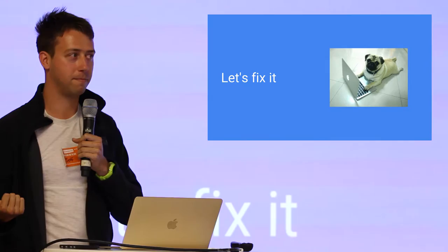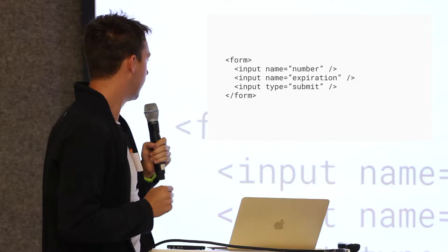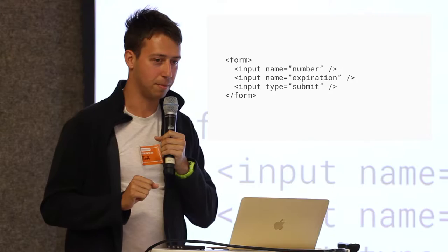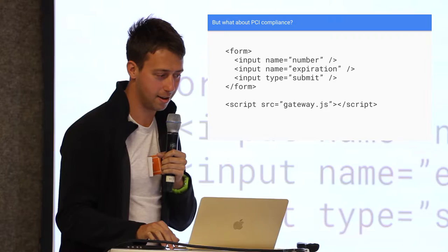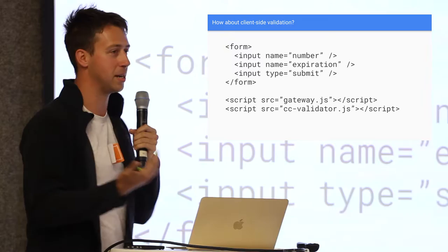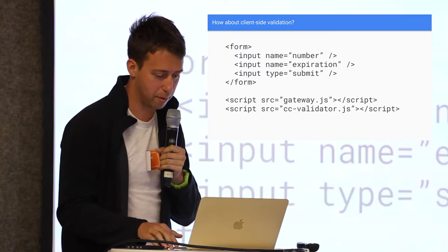Most of us are engineers, so let's fix it and build our own payment form. We can start with a really basic form with a number, expiration input, and submit — the most basic you can get. But obviously we're not going to be storing credit cards on our servers, so we have to add the gateway JavaScript to be PCI compliant. Then we want to validate input before it goes to the server, so we add the credit card validator JS. And a lot of people like paying with payment methods other than credit cards, so we add those too.